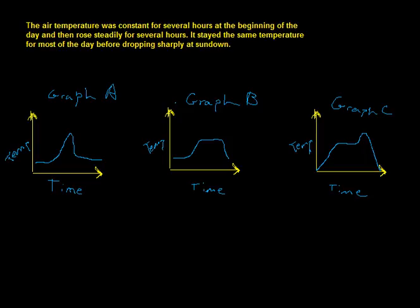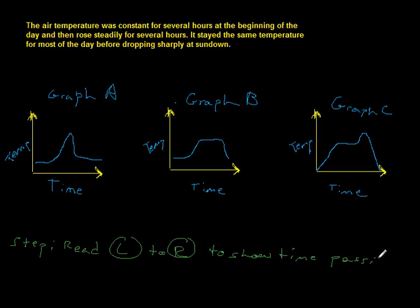Well, there are two steps to solving this problem. Let's change the color here. Step one says, read the graphs from left to right as time to show that time is passing. So read left to right to show time passing. And then the second step says to actually find keywords or list keywords and decide which graph shows them.